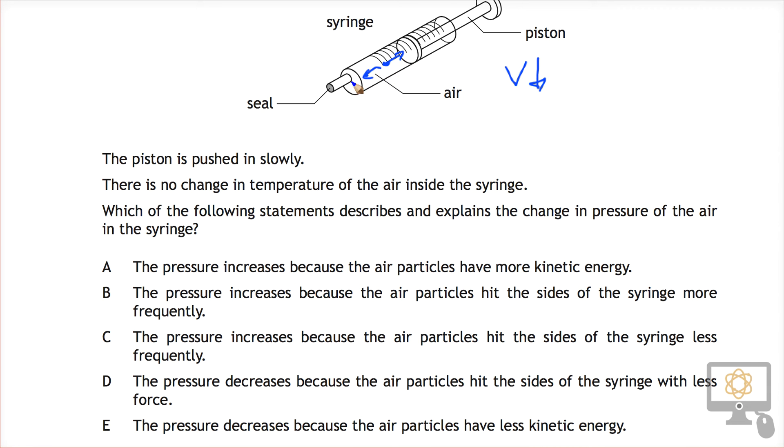And because it hits the walls more frequently, the air pressure is going to increase. So effectively that's the reason. It's got nothing to do with kinetic energy or the particles speeding up, because as we said, there is no change of temperature. So the pressure increases because the particles hit the walls more often. Let's have a look at our options. The pressure increases because the air particles have more kinetic energy? No, we've just explained that. The pressure increases because the air particles hit the sides of the syringe more frequently? That one I agree will be correct.